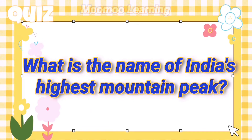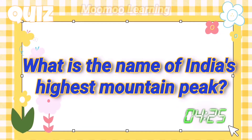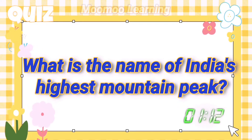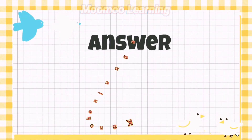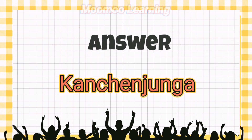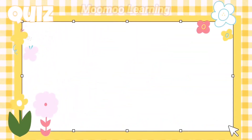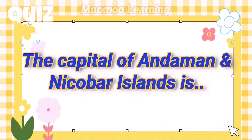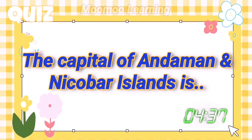What is the name of India's highest mountain peak? The capital of Andaman and Nicobar Island is Port Blair.